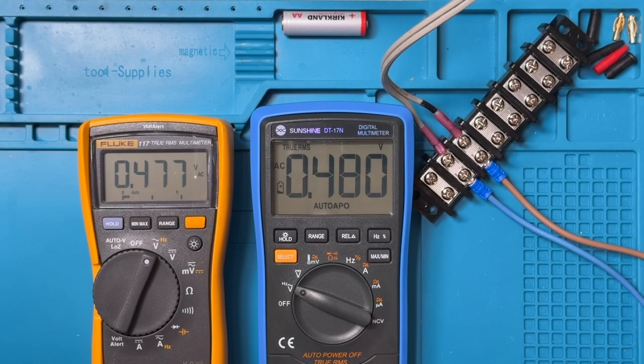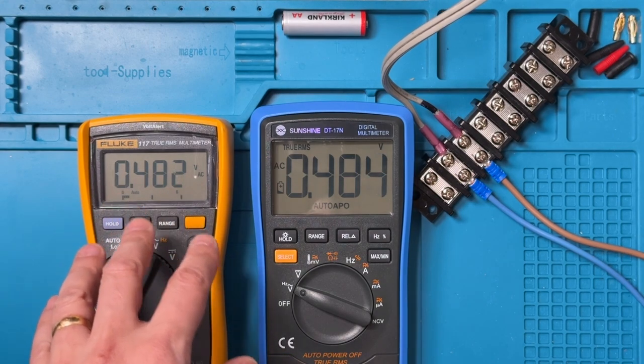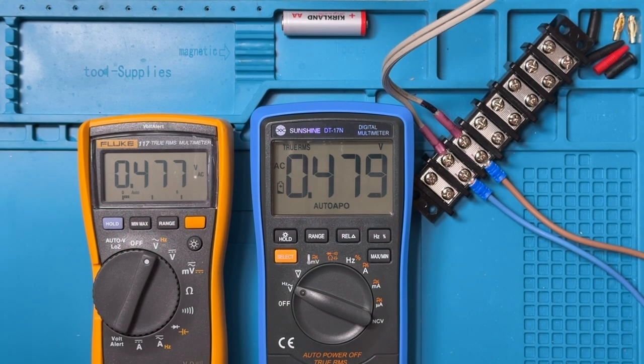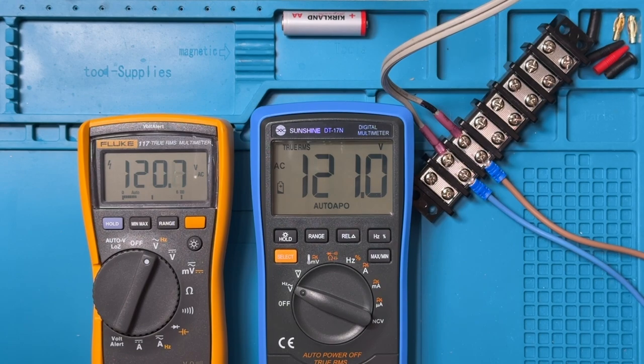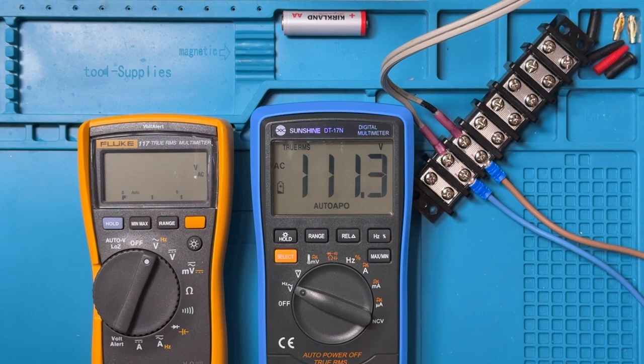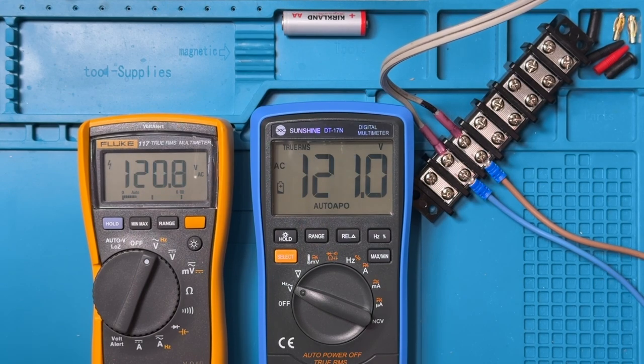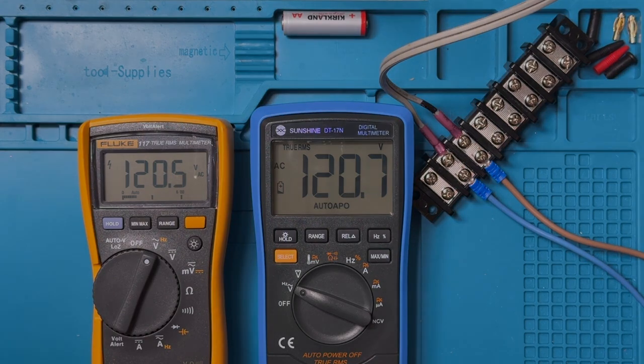Now for AC voltage, I'm going to compare against this Fluke 117 because I don't have an AC reference source. So we'll just see how the two track and the Fluke is pretty accurate. So right now the power is off, so we're seeing a little bit of ghost voltage. So that was on. You can see that the voltage is pretty close to what the Fluke is showing, maybe off by a tenth of a volt. Now let's just check the response time. So that's off. On. So just a little bit slower than the Fluke, but still pretty good. Nothing to complain about there.